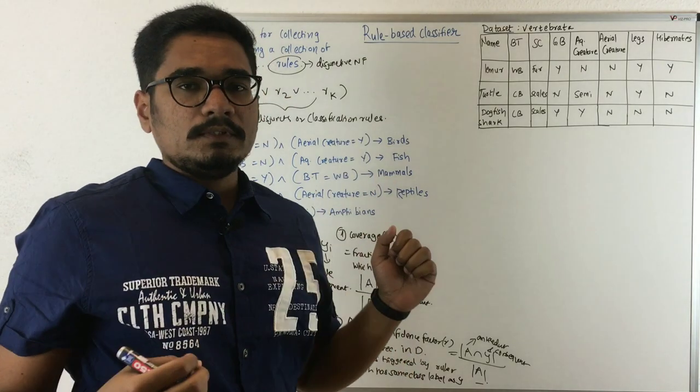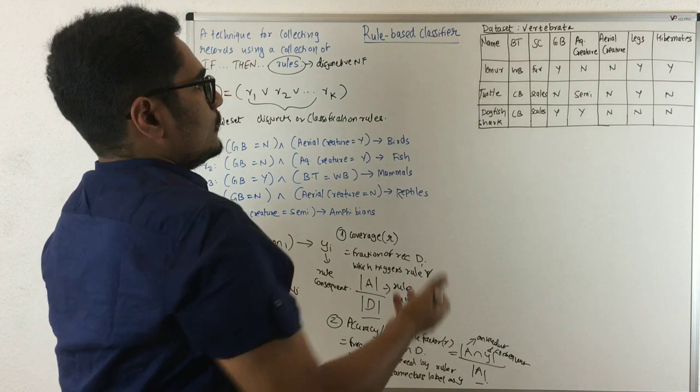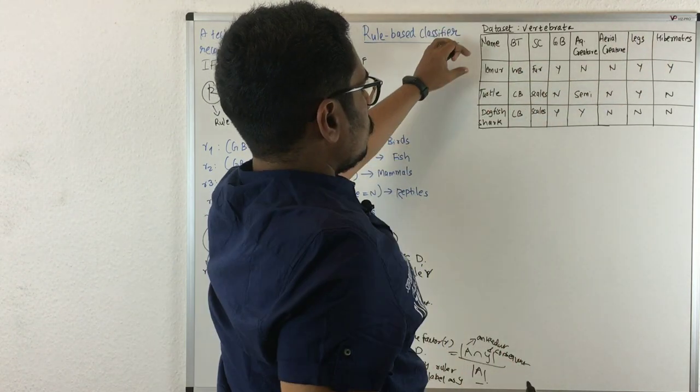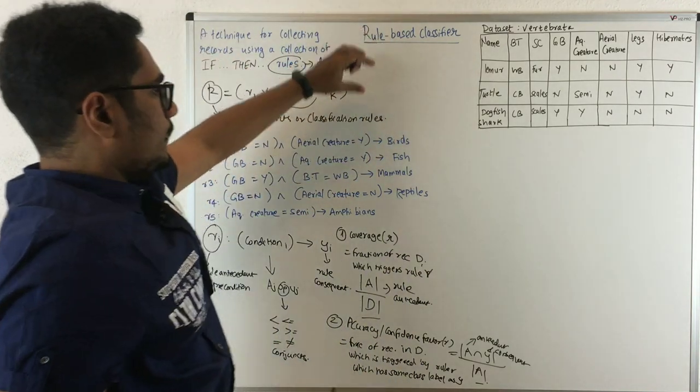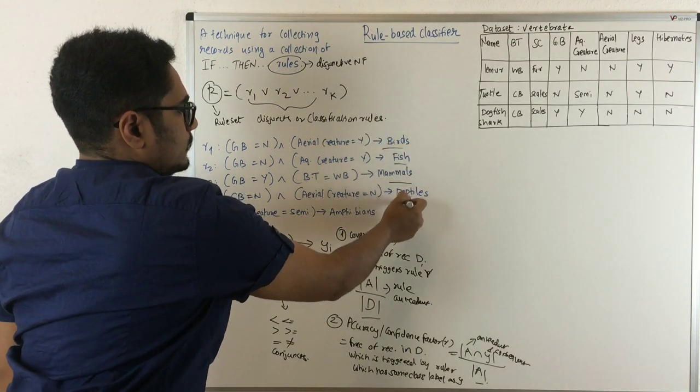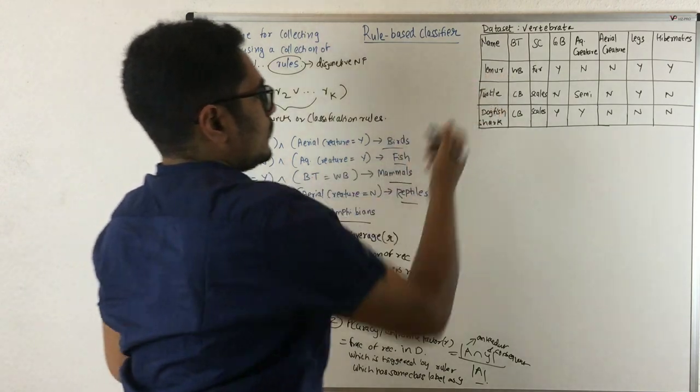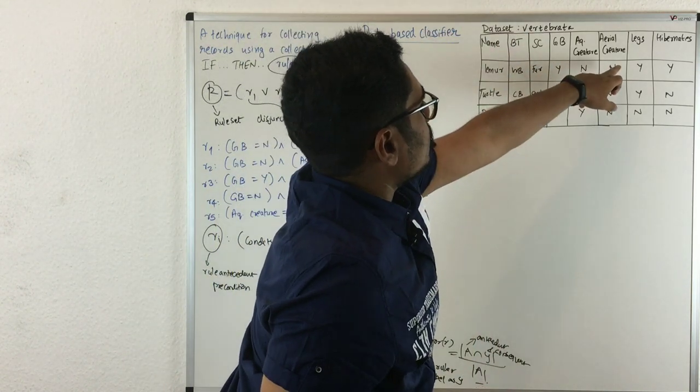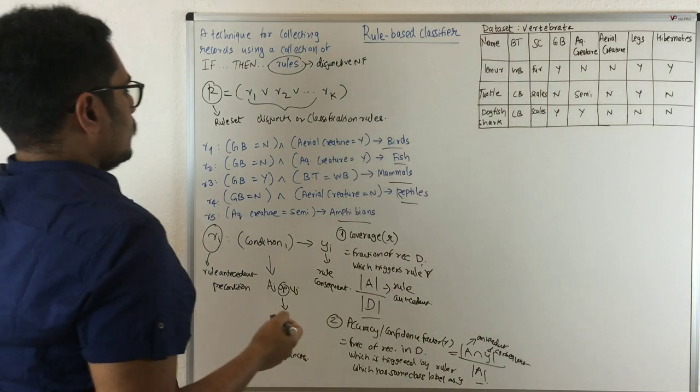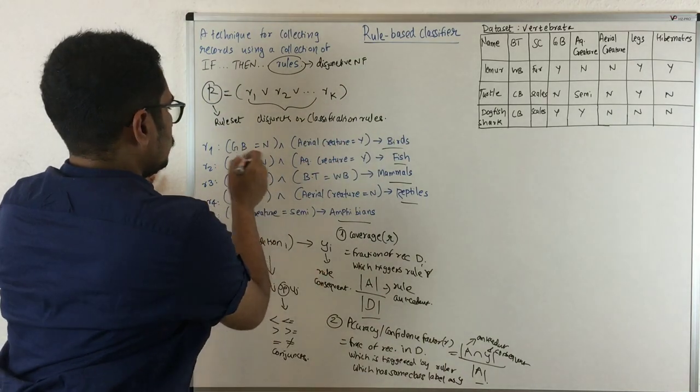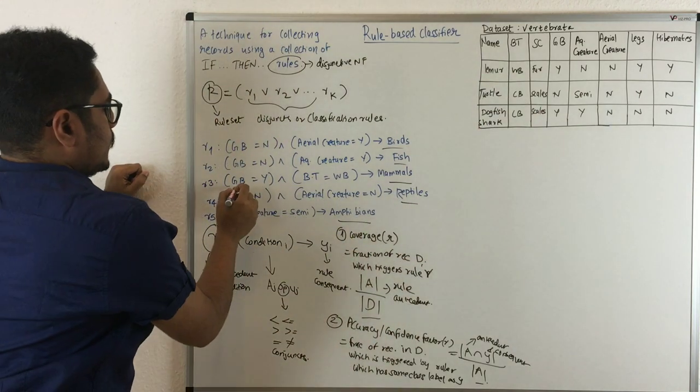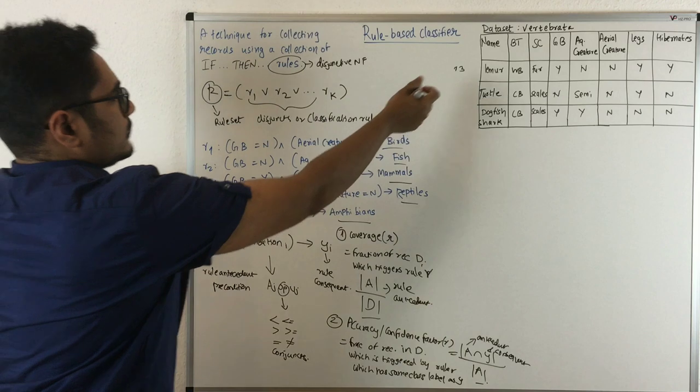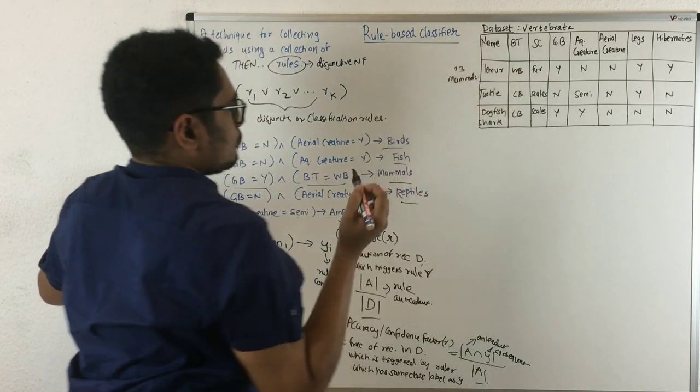Let's consider an example of how this basically classifies records. Say you have a dataset of vertebrata with many attributes and records. You have to classify each record into these rules, which are basically our classes. First, for lemur with body temperature warm, aquatic creature no, and gives birth yes - we've considered only two attributes: gives birth and aquatic creature. Gives birth yes and body temperature warm-blooded will classify this as mammal. It's classified with rule three and comes under mammals.